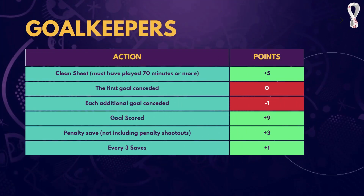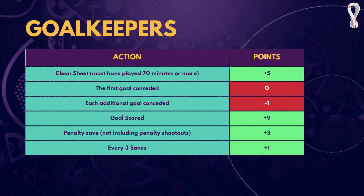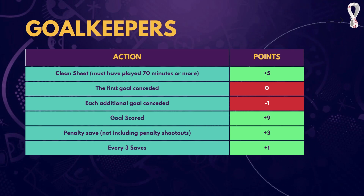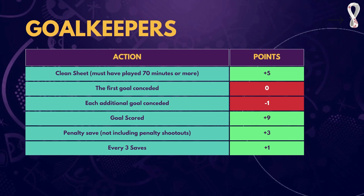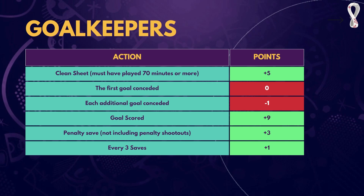Talking about specific positions — for goalkeepers, a clean sheet with 70 minutes or more played gives plus 5. For the first goal conceded, there's no point deduction. For every additional goal conceded beyond the first, it's minus 1. For every goal scored by a goalkeeper it's plus 9. For every penalty save (not including shootouts) it's plus 3. For every 3 saves a goalkeeper makes, it's plus 1.